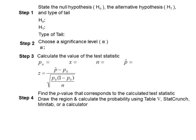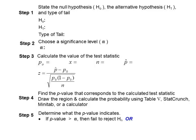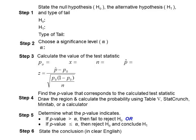Number four: we calculate the p-value by using a table, StatCrunch, Minitab, or a graphing calculator. Step number five: we determine if we fail to reject the null — that happens when the p-value is greater than alpha. If the p-value is less than or equal to alpha, then we reject the null and we conclude the alternative. We have a saying: when the p-value is low, H-sub-O must go. That means we reject the null and conclude the alternative. Step number six: we state the conclusion in clear English.